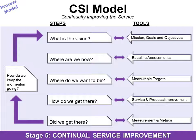Let's look at the CSI model first. It starts with: what is the vision? That's generally the purview of the C-suite — all those officers whose titles start with 'chief.' They come up with the vision, and as employees our job is to embrace that vision. The tools used in that stage are the mission, the goals, and objectives.